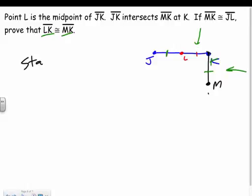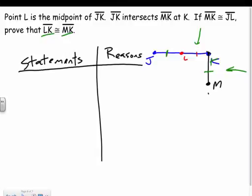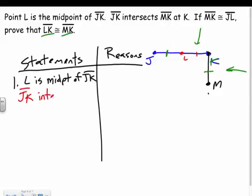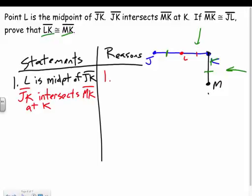For a two-column proof, we have statements on one side and reasons behind our statements on the other. Number one: I write everything I was given. L is the midpoint of JK — given. JK intersects MK at K — given. MK is congruent to JL — also given. Always write down everything you're given as your first reason.